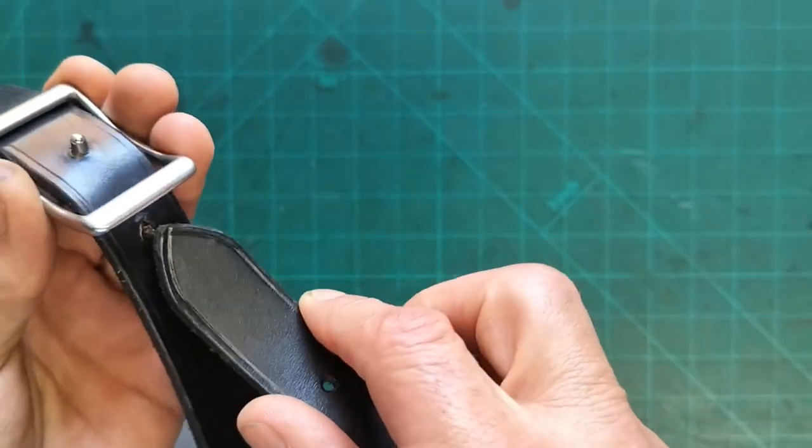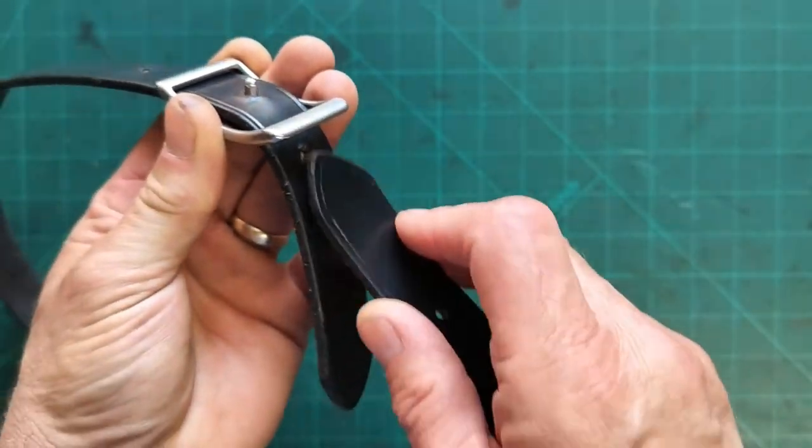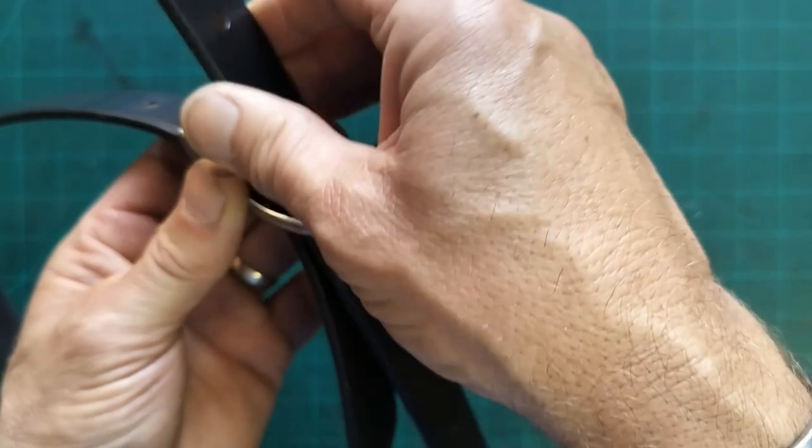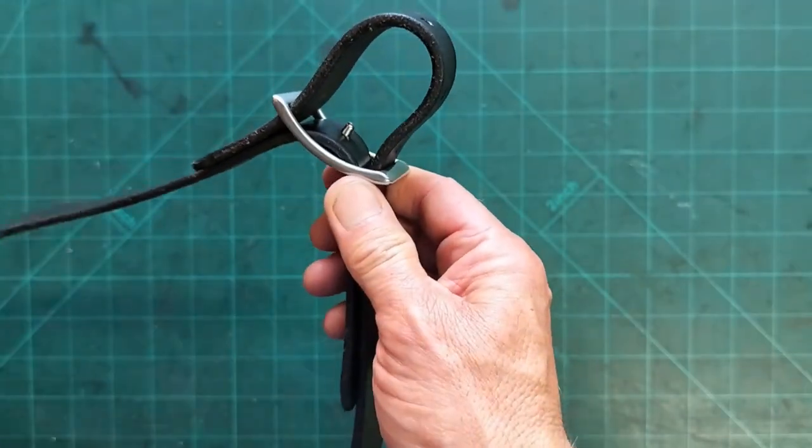The other side is going to feed up from underneath there, so between the leather and that buckle. You're going to take it up and through, pull it to where you want it tight, and push it down through the other side as well.